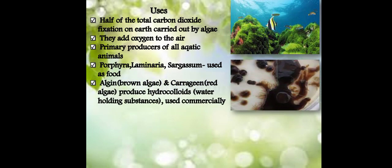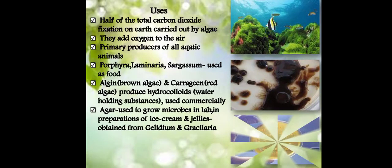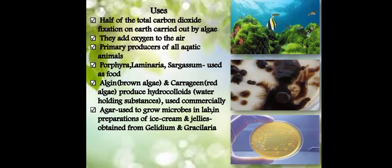They are the primary producers for all aquatic animals. Porphyra, Laminaria, Sargassum, these algae are used as food. Algin from brown algae and carrageenan from red algae produce hydrocolloids, this is a water-holding substance, and this substance is used commercially. Agar used to grow microbes in lab or in preparation of ice cream and jellies is obtained from Gelidium and Gracilaria.